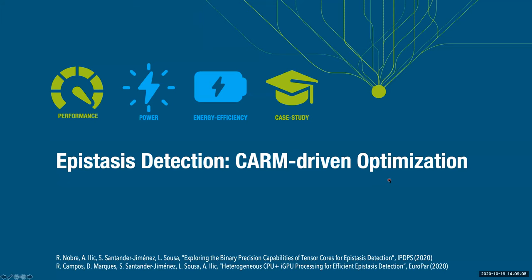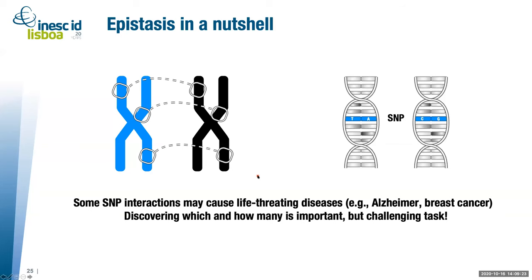Now let's move to another case study: epistasis detection, an important application in bioinformatics. In each human cell, we have pairs of chromosomes — one inherited from the mother and one from the father. Each chromosome consists of a long DNA strand, with certain portions defined as genes, represented here as squares, each having different combinations of nucleotides that make us who we are.